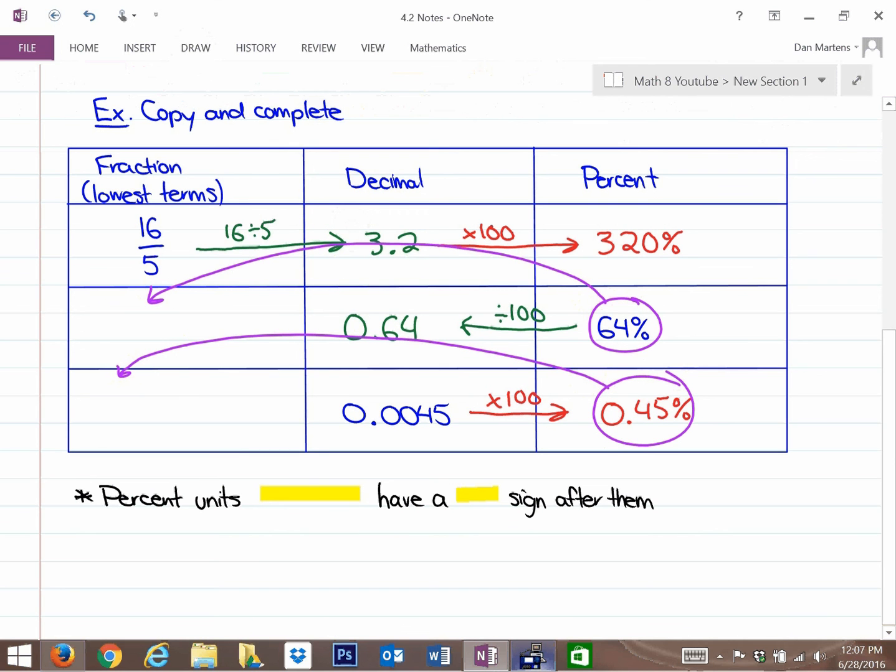Okay, so what we looked at here is percent is always out of 100. So you can take that percent number, here's your initial fraction, and put it over 100. So 64% as a fraction is 64 out of 100. Or 0.45 as a percent is 0.45 out of 100.